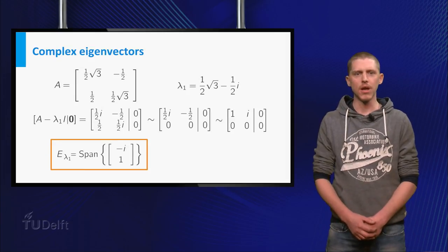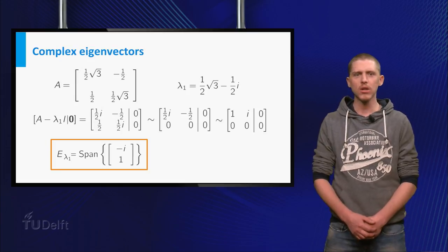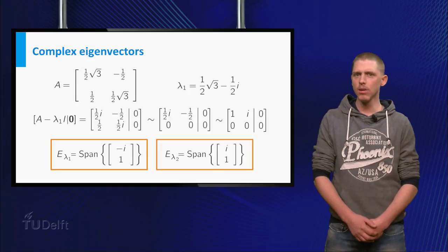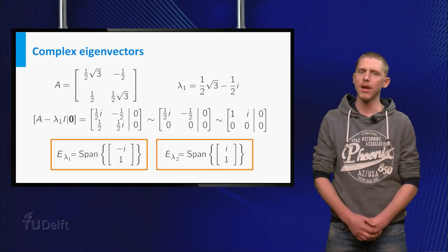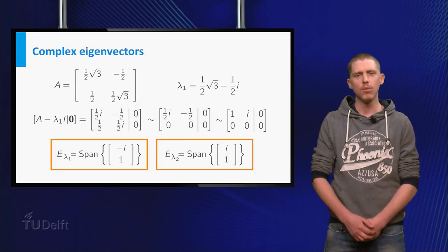All eigenvectors of A corresponding to lambda 1 must be a non-zero multiple of the complex vector minus i, 1. In a similar way you can calculate that the eigenspace for lambda 2 are all multiples of the complex vector i, 1.